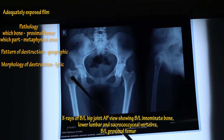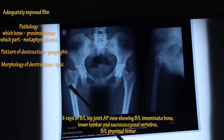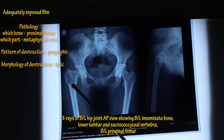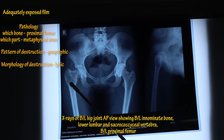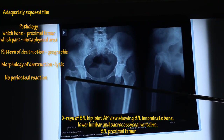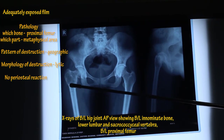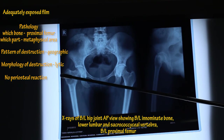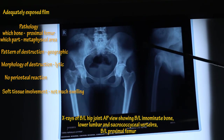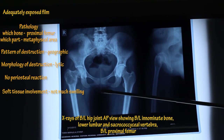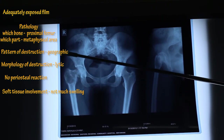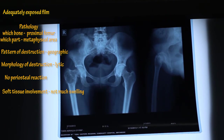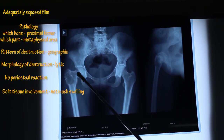The matrix is neither chondroid nor osteoid. Since it is a lytic lesion, we should not describe the matrix further. There is no periosteal reaction seen. Looking at soft tissue, it is not much involved — there is no significant swelling. The soft tissue on this part is comparable to the other side.